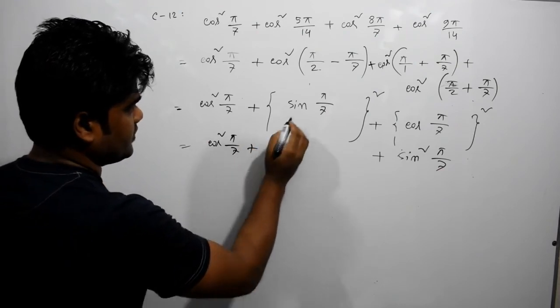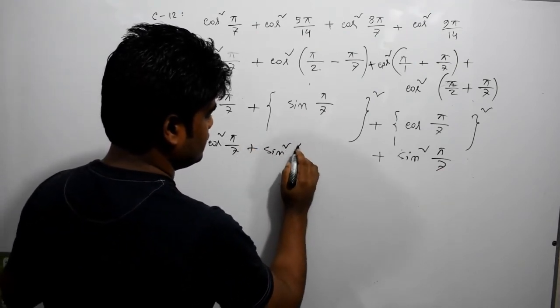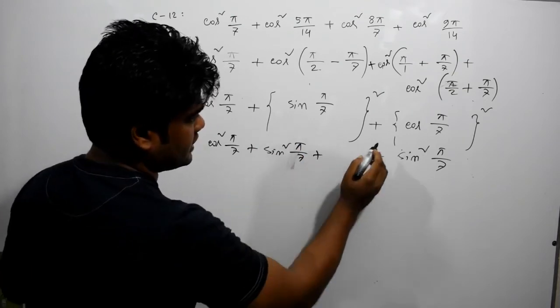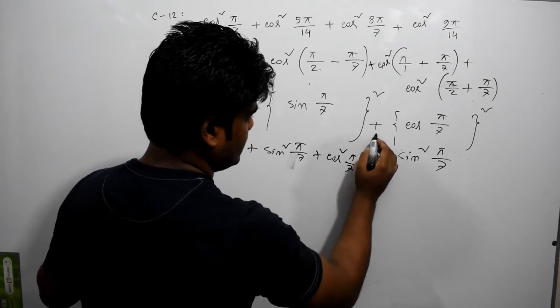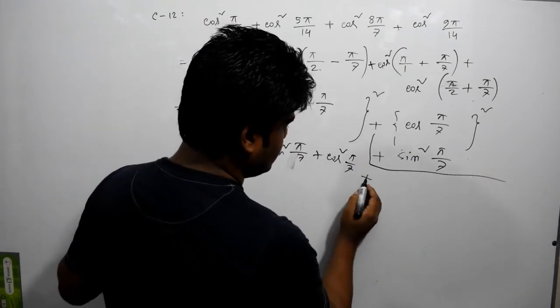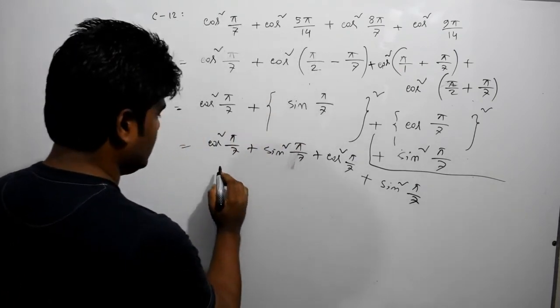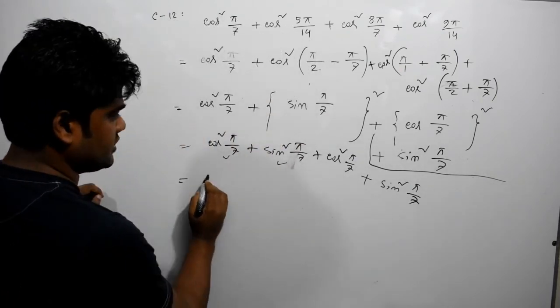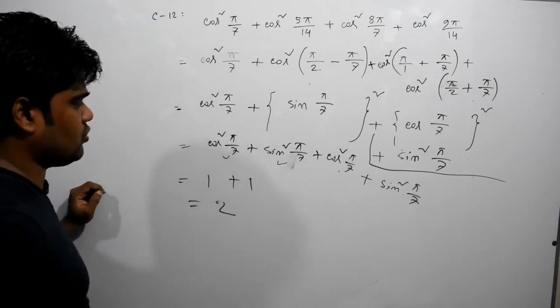So let's see what cos squared is. Pi by 7 plus sin squared pi by 7 plus cos squared pi by 7. Plus sin squared pi by 7. Cos squared pi by 7, sin squared pi by 7 equal to 1, plus cos squared pi by 7, sin squared pi by 7 equal to 1. Equal to 2.